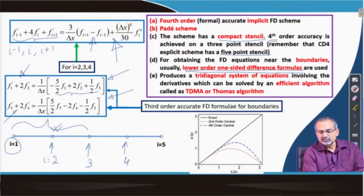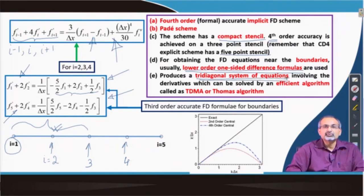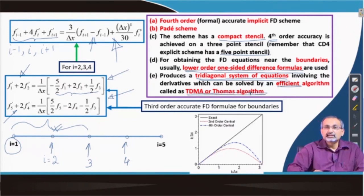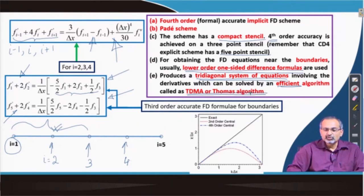This kind of structure leads to what is called a tridiagonal system of equations when you write down these equations in matrix form. This type of tridiagonal system is efficiently solved with an algorithm called the tridiagonal matrix algorithm, abbreviated as TDMA or the Thomas algorithm. We will talk more about this algorithm in a later lecture.